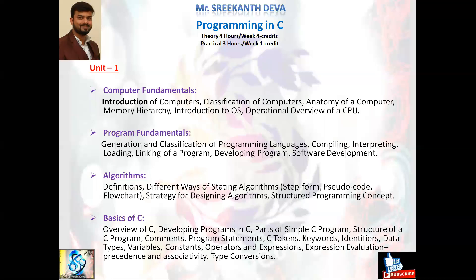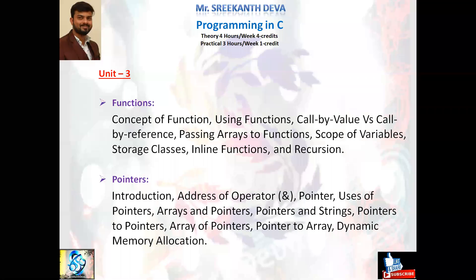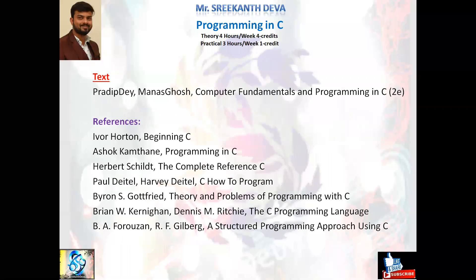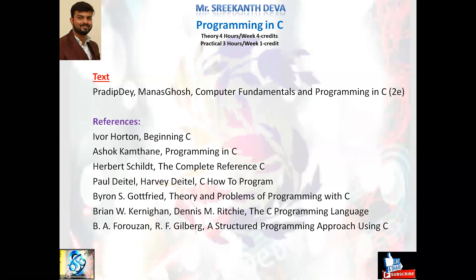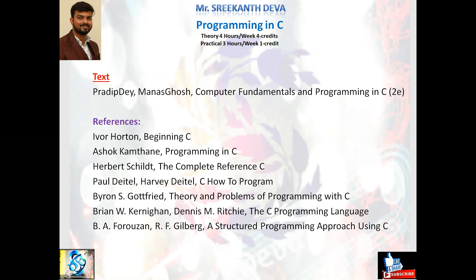To summarize: Unit 1 covers computer fundamentals, program fundamentals, algorithms, basics of C. Unit 2 covers input/output, control statements, arrays and strings. Unit 3 covers functions and pointers. Unit 4 covers user-defined data types and files. The prescribed book is 'Computer Fundamentals and Programming in C' by Pradeep Dey and Manas Ghosh, second edition. Reference books include Beginning C, Programming in C, Complete Reference C, C How to Program, Problems of Programming with C, The C Programming Language, and A Structured Programming Approach Using C.